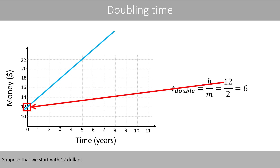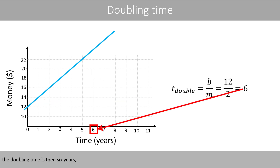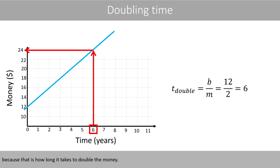Suppose that we start with twelve dollars and the bank puts two dollars in the account each year, which means the slope is equal to two. The doubling time is then six years, because that is how long it takes to double the money.